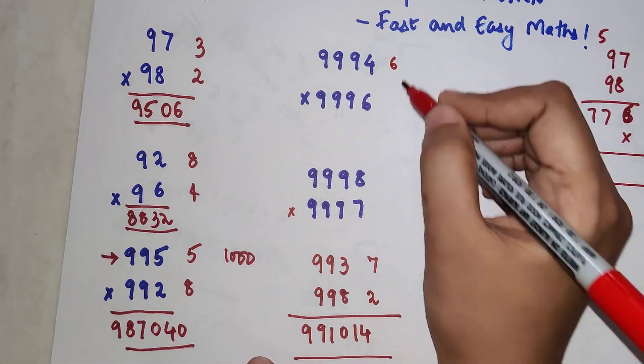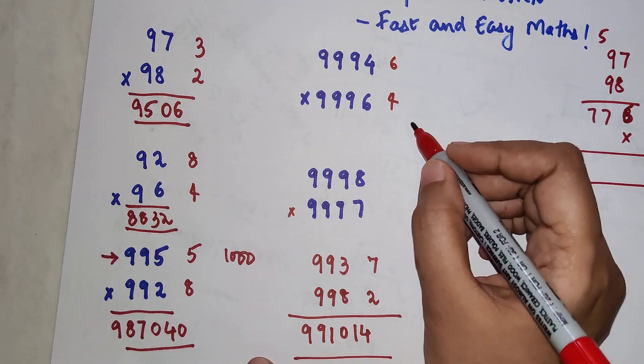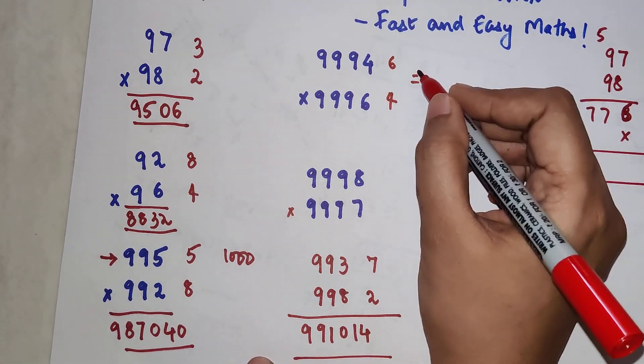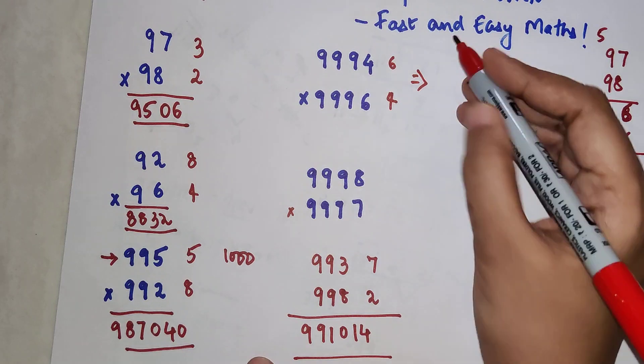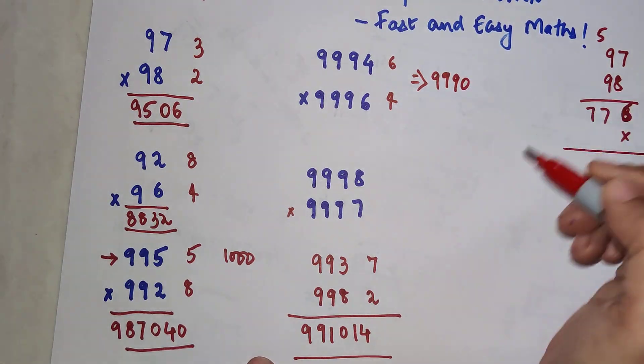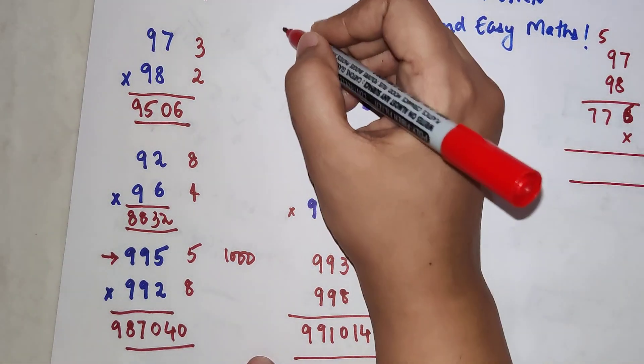Now over here the difference is 6, here the difference is 4. If you subtract, the answer is 9990. Please understand, this is close to 10,000.